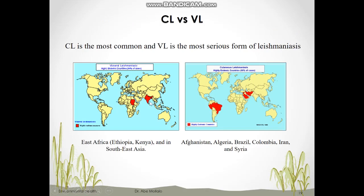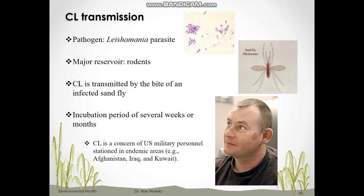The major pathogen for leishmaniasis is the Leishmania parasite, and different species cause different forms of the disease. The major host is rodents for CL and dogs for VL. The vector for CL is the sandfly, named Phlebotomus papatasi, which transmits the pathogen from host to humans. The incubation period of CL is several weeks to months. CL is a major concern for US military personnel serving in Middle East countries such as Iraq and Afghanistan, because CL is endemic in most Middle Eastern countries.